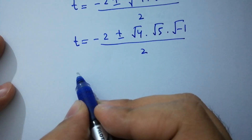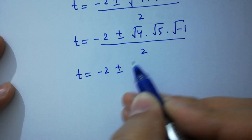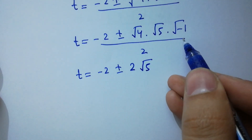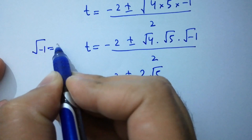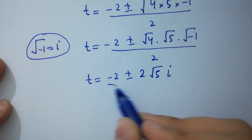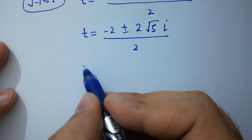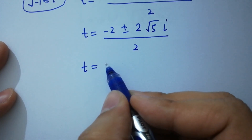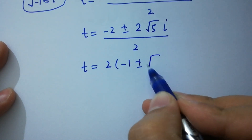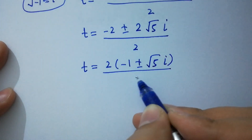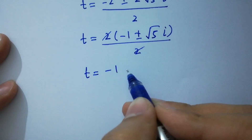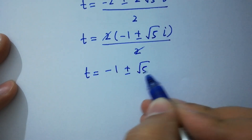t equals minus 2 plus or minus 2 times square root of 5 times i, over 2 — since square root of 4 is 2 and square root of minus 1 equals i from complex numbers. The 2 cancels, giving t equals minus 1 plus or minus square root of 5 times i.